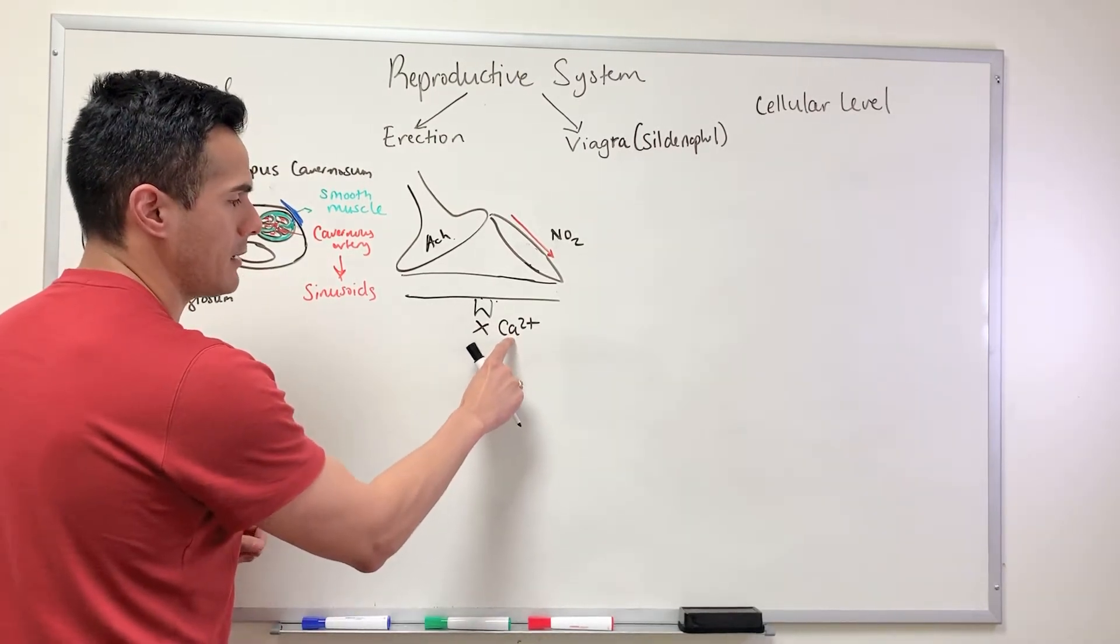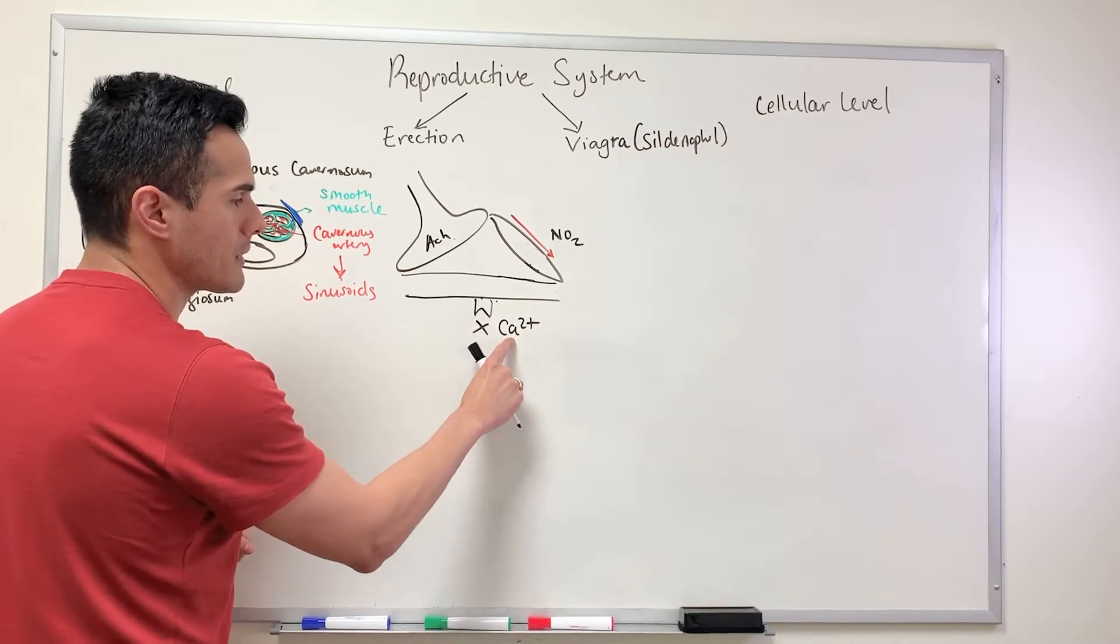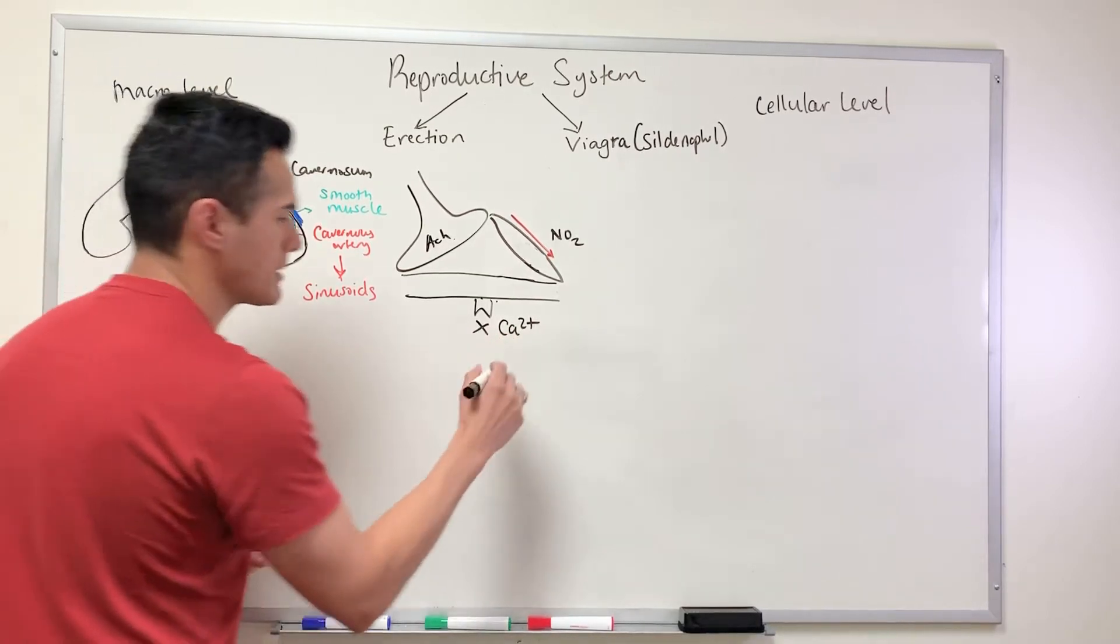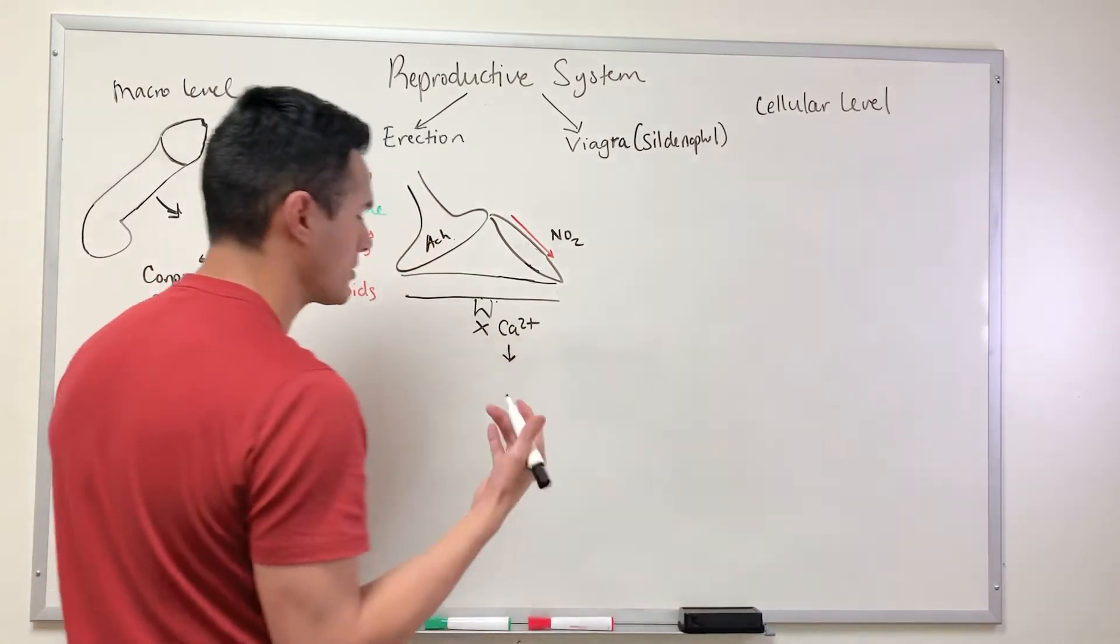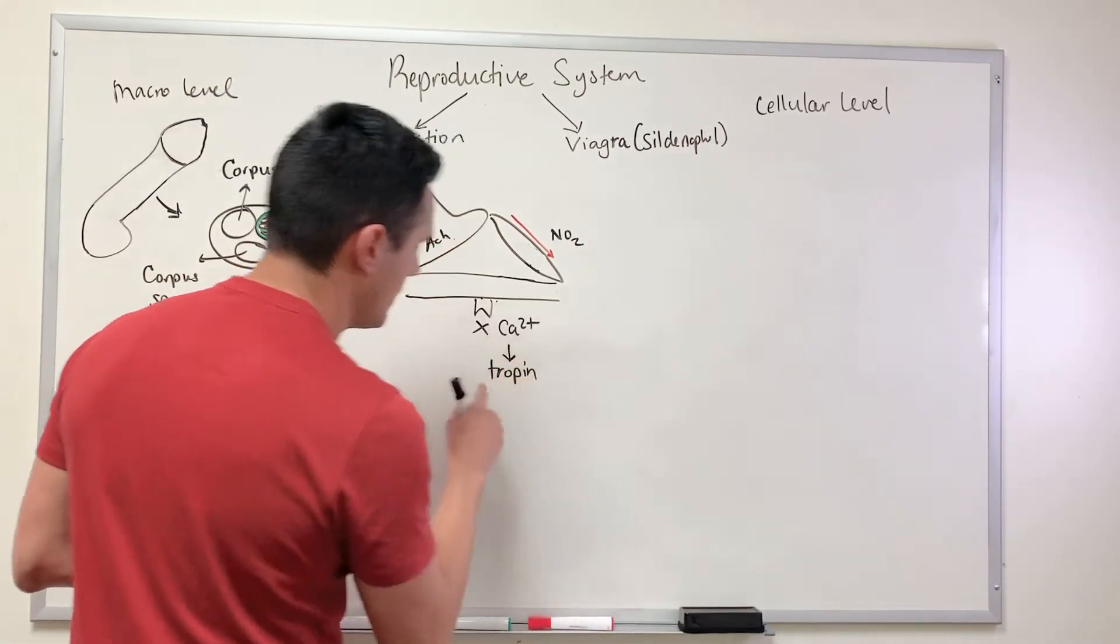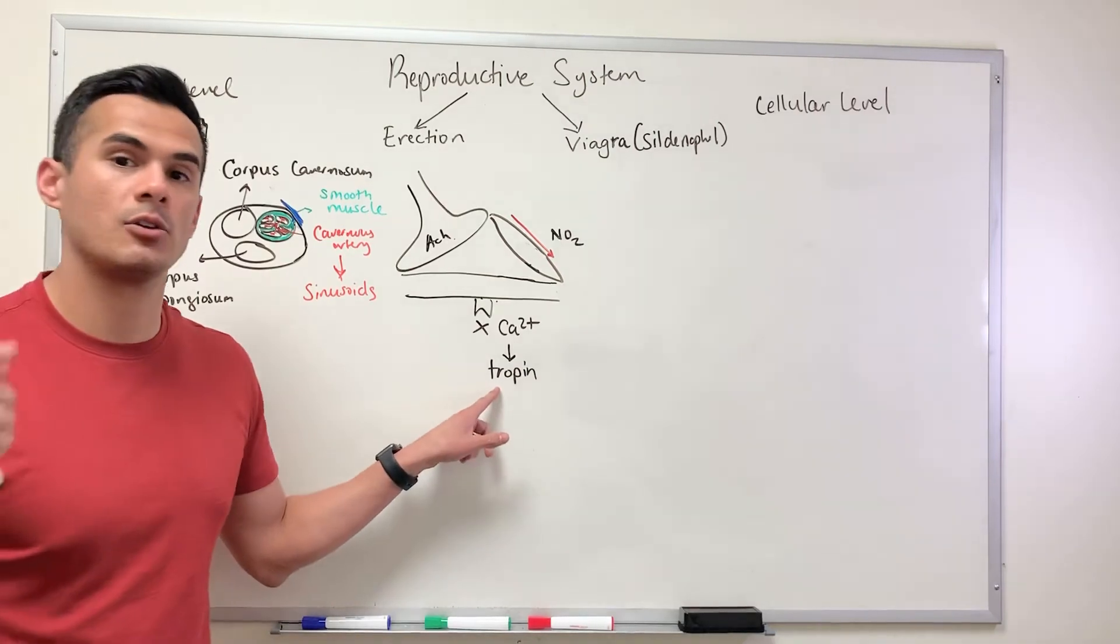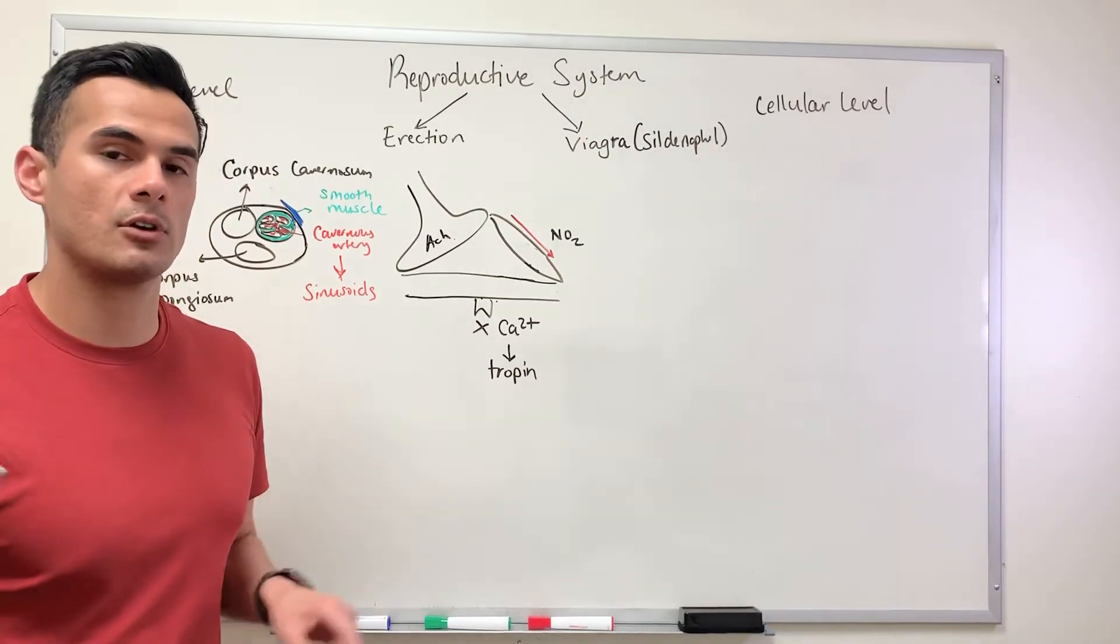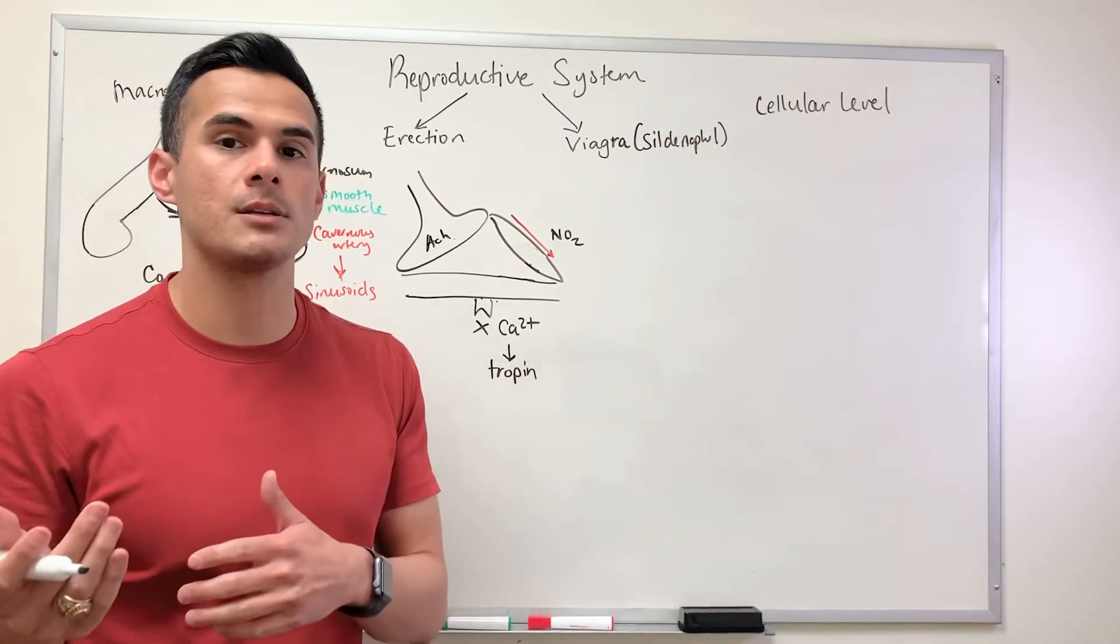What's the significance of calcium? When you think about muscle physiology, calcium binds to troponin and this is what initiates the cross bridge cycle. Whenever the cross bridge cycle occurs, that's how the muscle becomes in the contracted state.